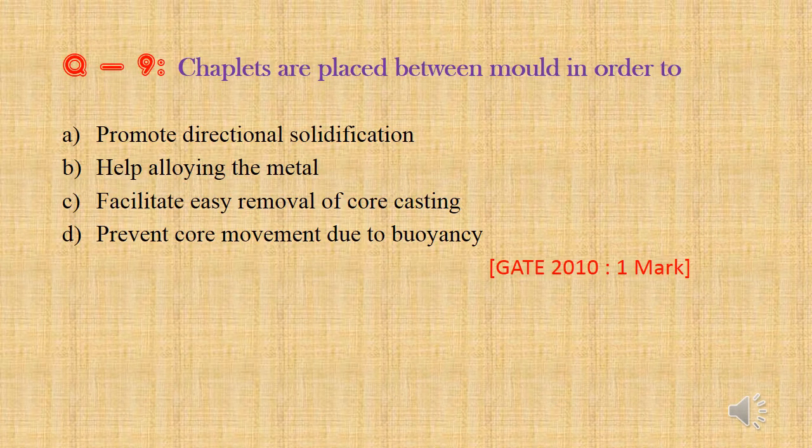Question 9: Chaplets are placed between the mold in order to — Option a: Promote directional solidification, Option b: Help alloying the metal, Option c: Facilitate easy removal of core from casting, Option d: Prevent core movement due to buoyancy.